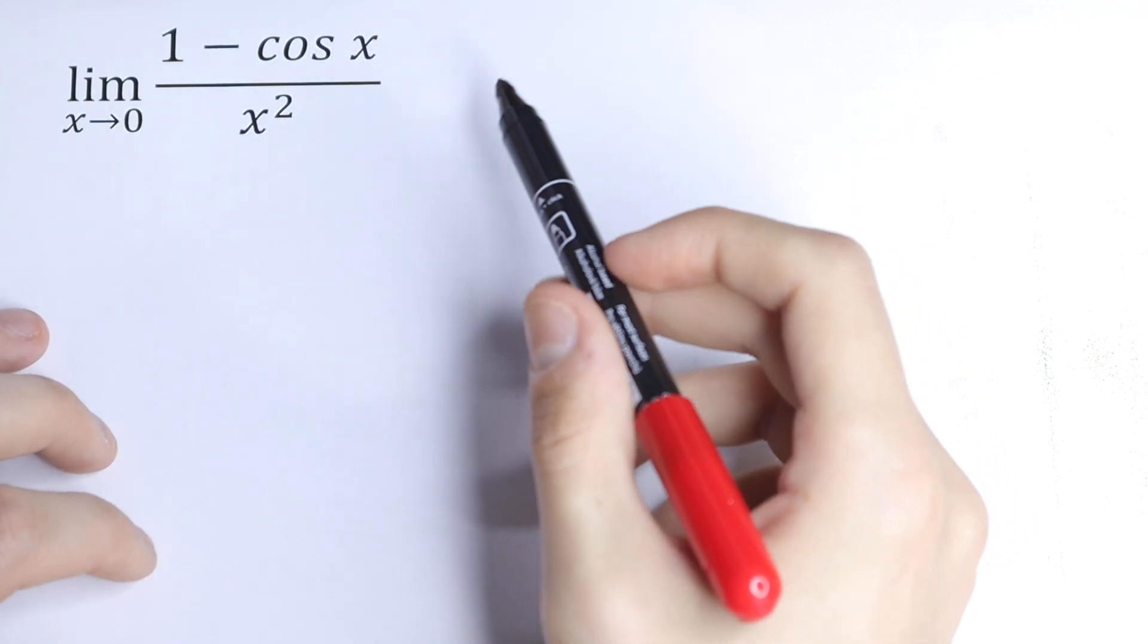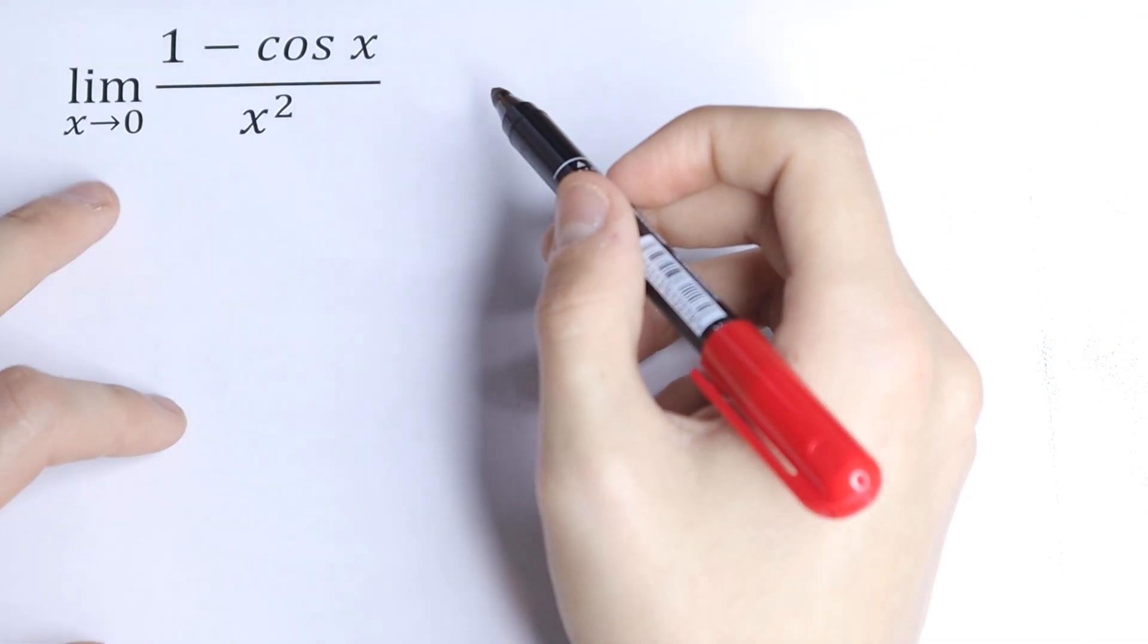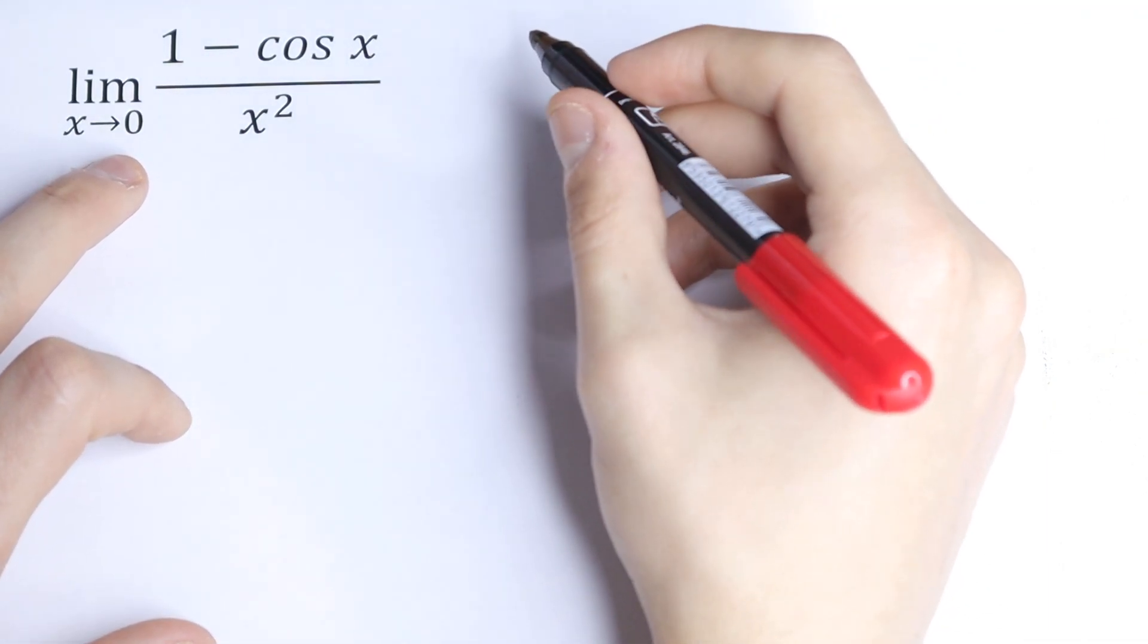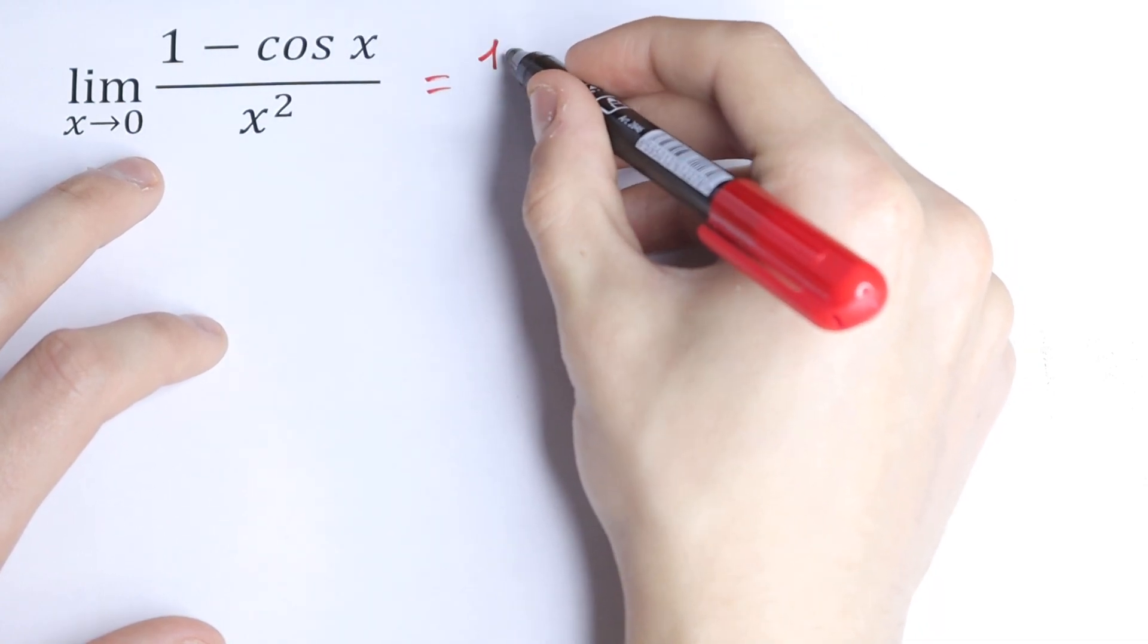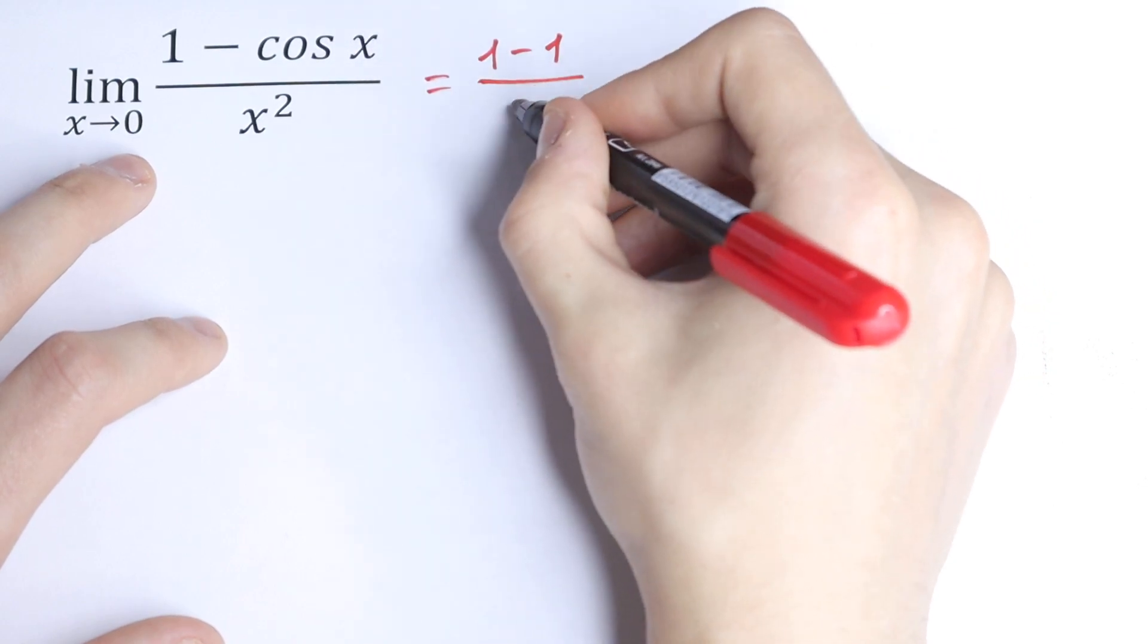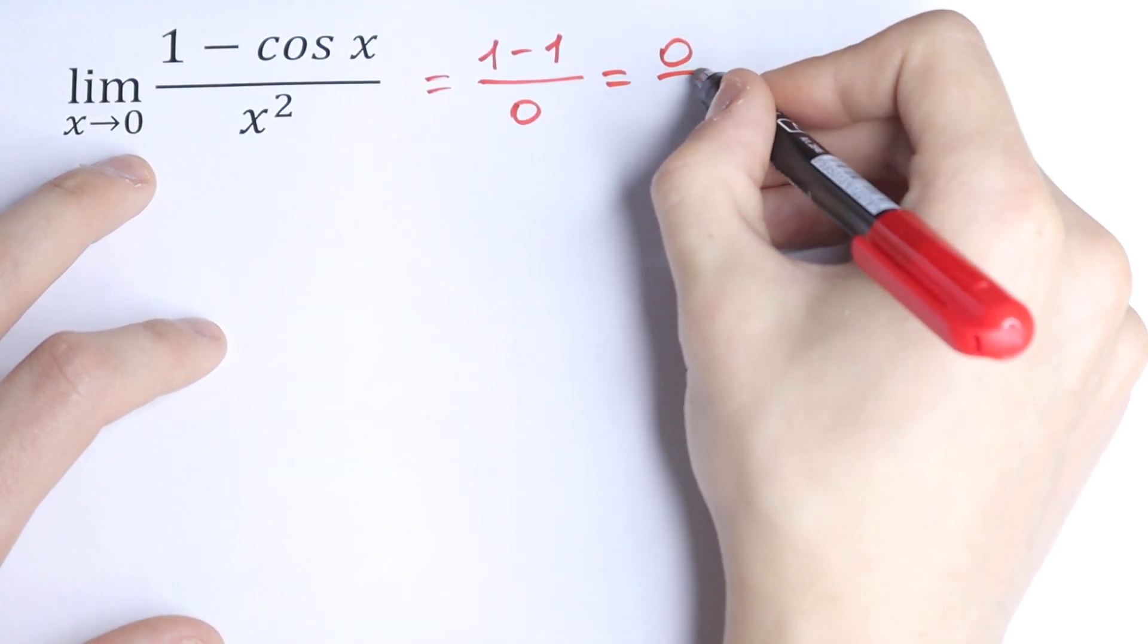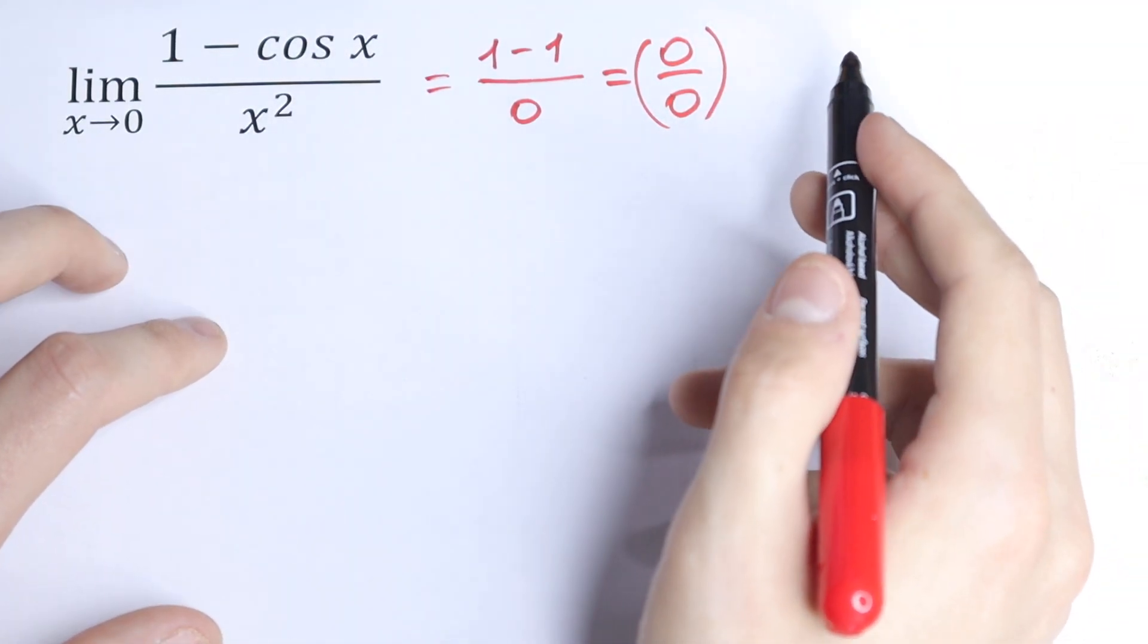How can we solve this? First, we can plug in 0 using direct substitution. What do we have? This will be equal to (1 - cos 0) / 0² = (1 - 1) / 0 = 0/0. 0/0 is undefined, so we don't know what value that represents.